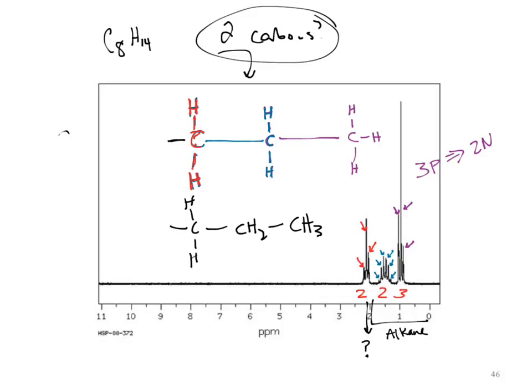Those two carbons need to be added to the structure in such a way that they don't bring in more hydrogens, and they need to be identical to each other so we don't get new carbons in our NMR. I could add one here and one here, but then I'm missing three bonds — minimally they have to be connected, so I'm only missing four bonds. They can't be hydrogen, chlorine, bromine, or nitrogen.